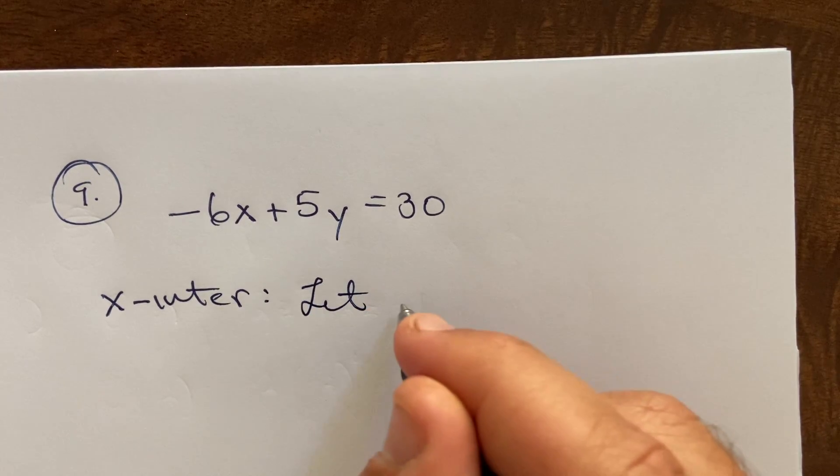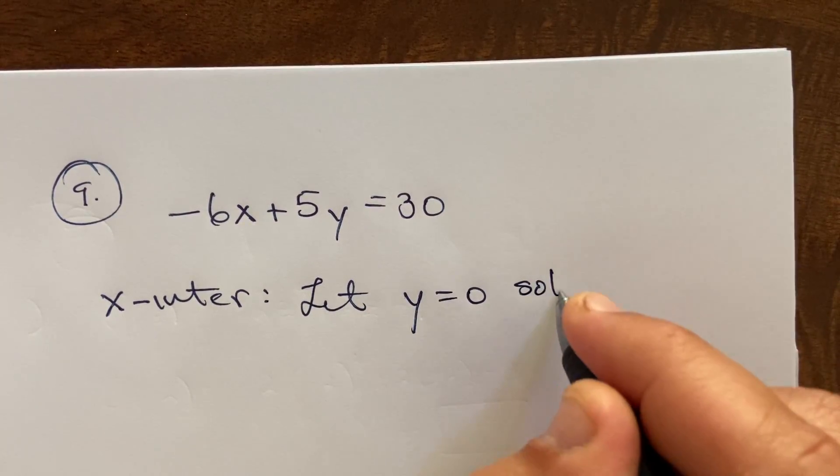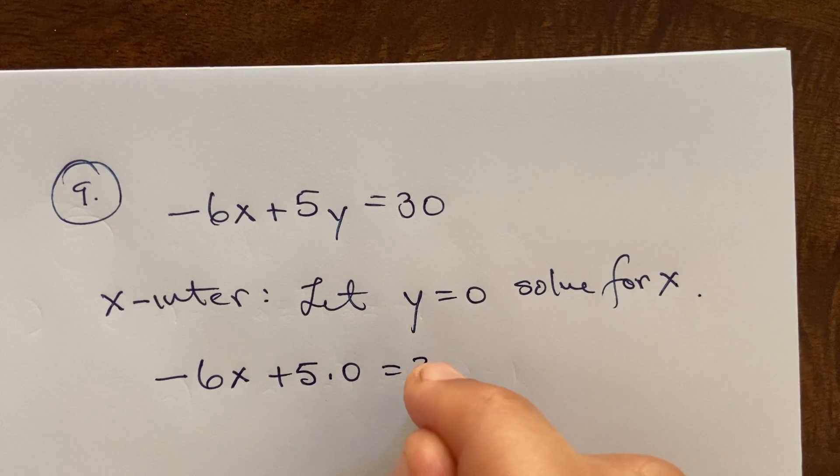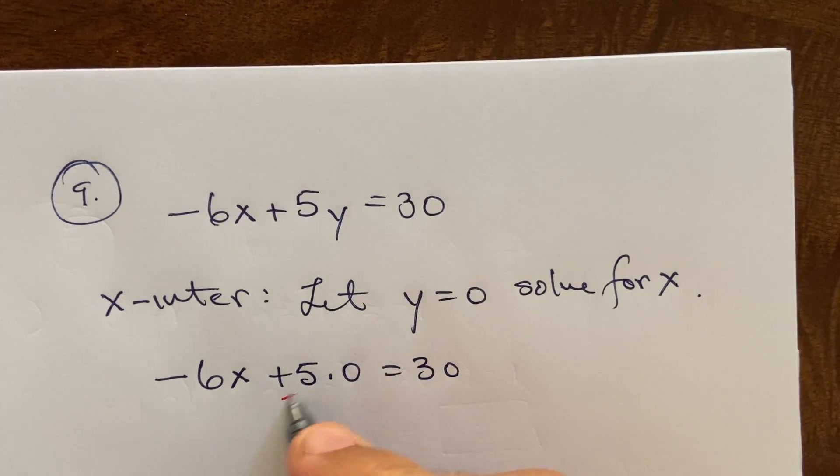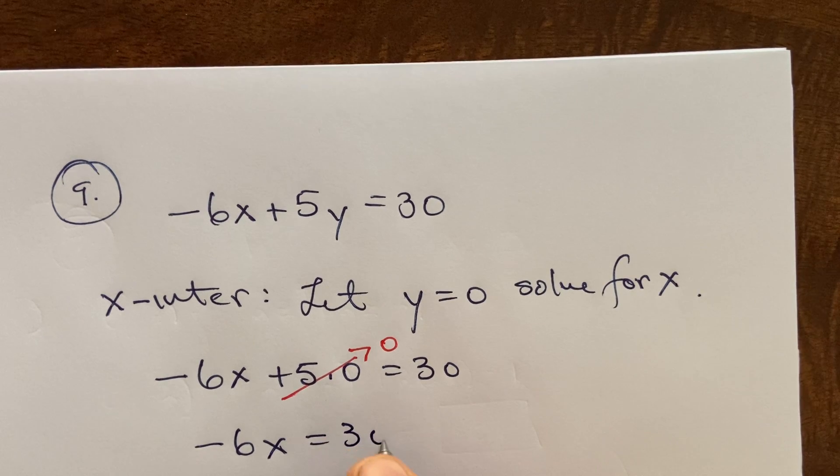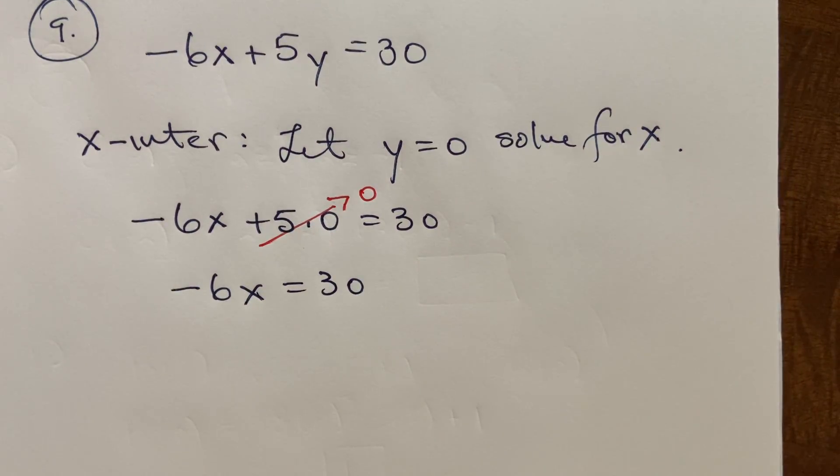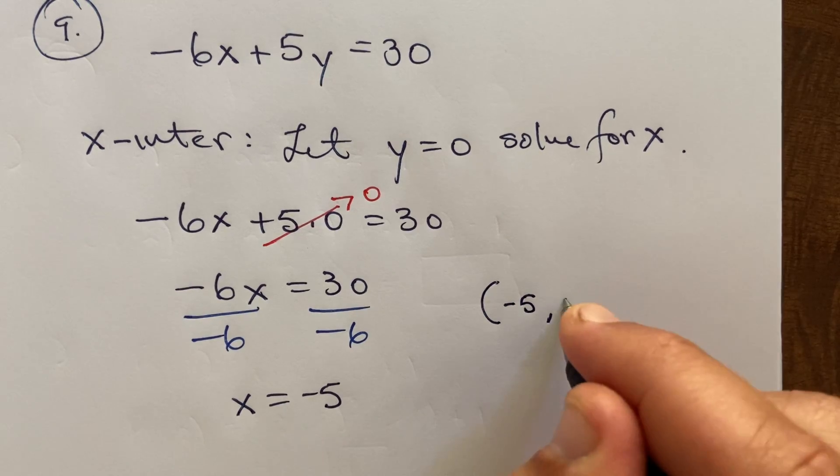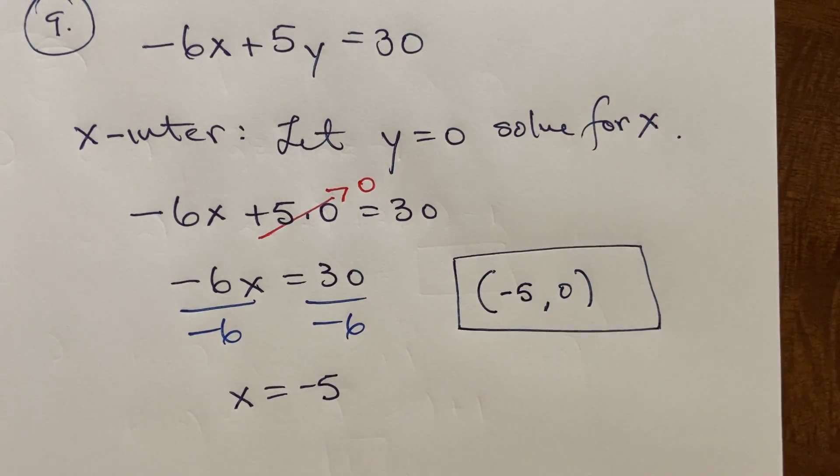So for x intercepts, we always let y equals zero and then solve for x. So I'll go ahead and do that. So negative six x plus five times zero equals thirty. So this piece, I'm letting y equals zero to look for an x intercept. So we're left with negative six x equals thirty, divide by negative six, so x equals negative five. What that would mean then, as an ordered pair, we'd have negative five zero as our x intercept.